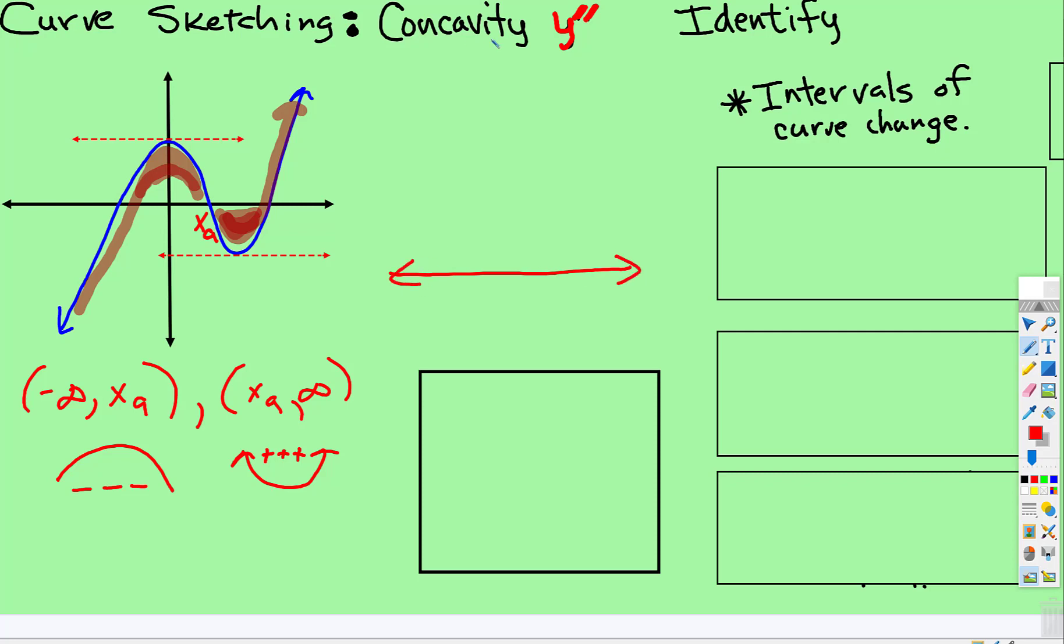So see how this says second derivative? Well, you're going to set the second derivative equal to zero, and then you're going to figure out what are the x values. In this case, we just had one. So on the number line, there would just be one. We'd call that x sub a. And then here's your two intervals. We said on this one, this interval was concave down, and this interval was concave up.